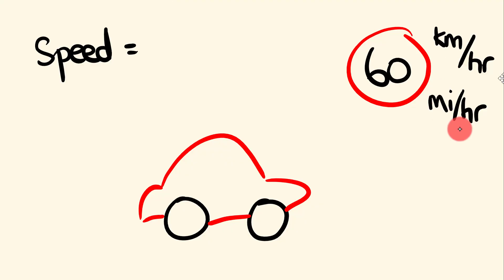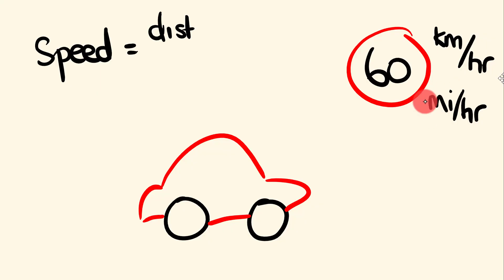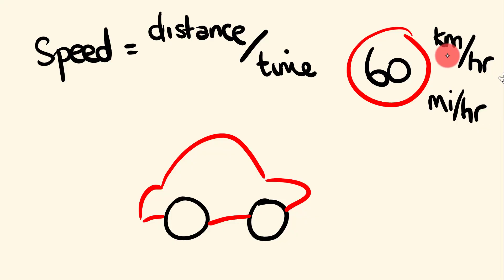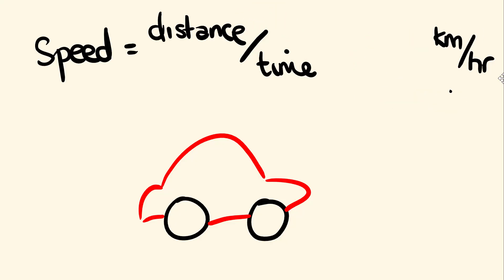Both units — kilometers per hour and miles per hour — have the same format. On the top you have kilometers or miles, which is the distance, and we divide that by hours, which is the time. So whether it's kilometers per hour or miles per hour, you can easily see that speed is equal to the distance divided by the time. Let's have a look at an example.